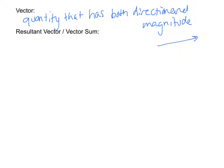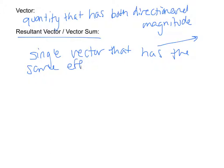A resultant vector, or a vector sum, is the single vector that has the same effect as two vectors.